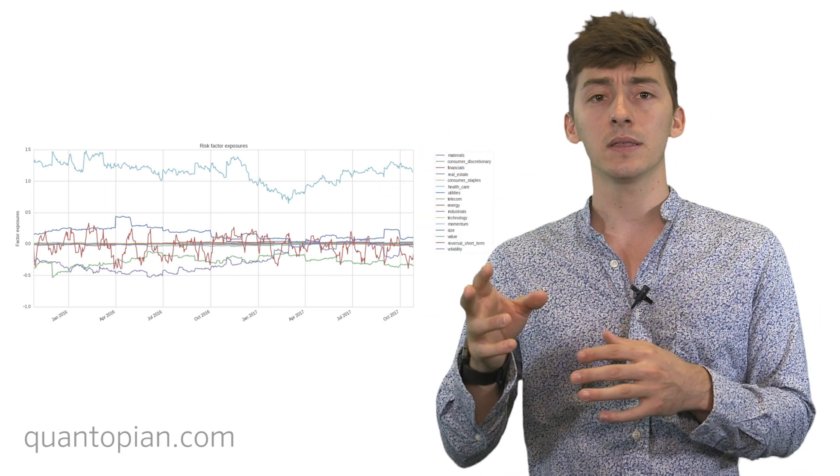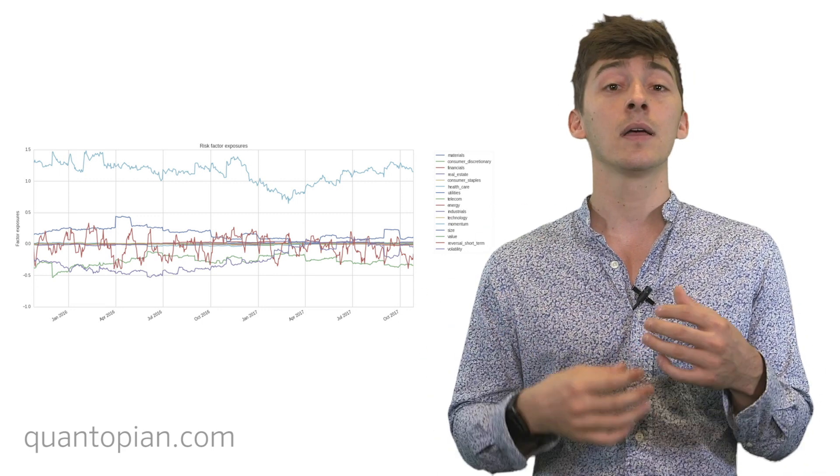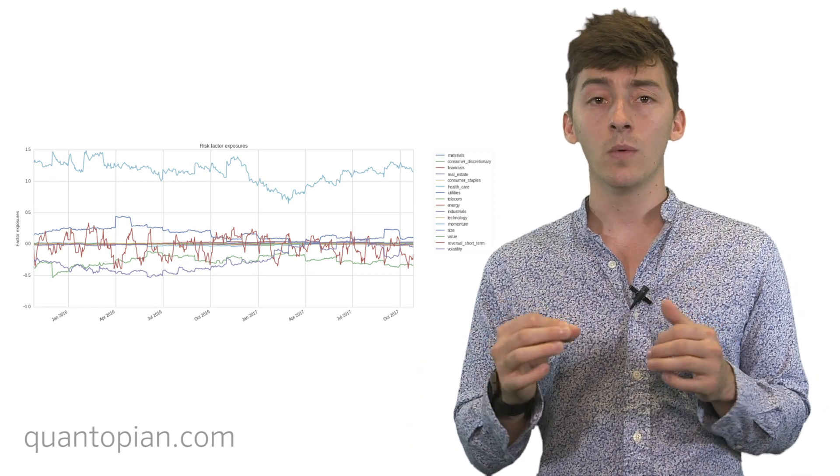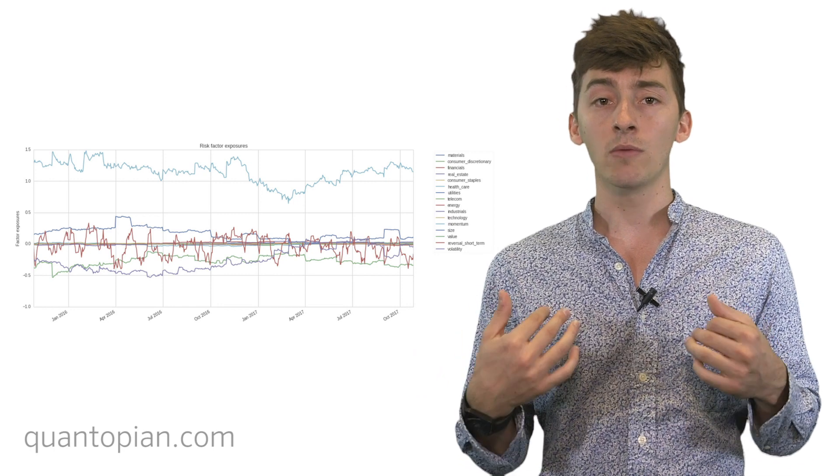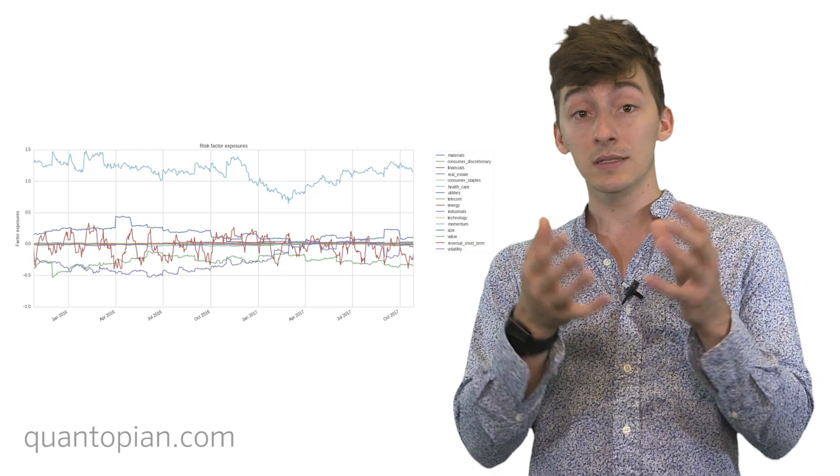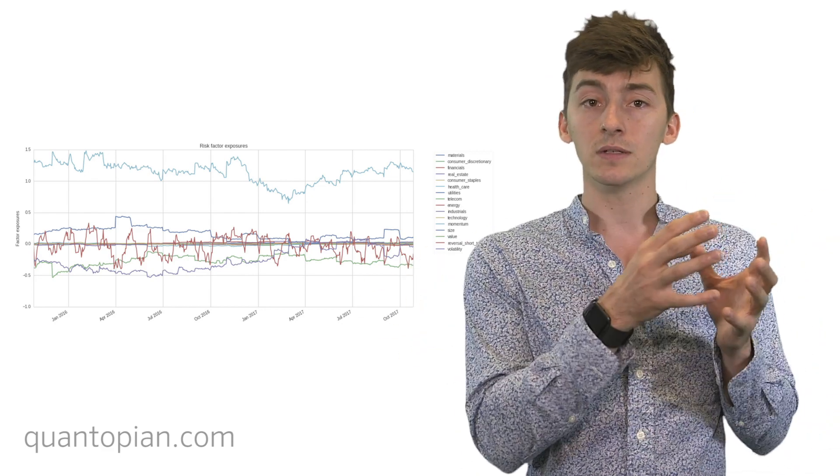And we can get more nuance than that. We can add individual sectors. We can add particular investment styles that we think are common and are as a result risky. And once we have all of these individual risk factors all laid out, what we can do is compute the exposure of our portfolio to each of these individual risk factors. And this lets us break down the return stream in terms of those as well as the volatility in terms of those.